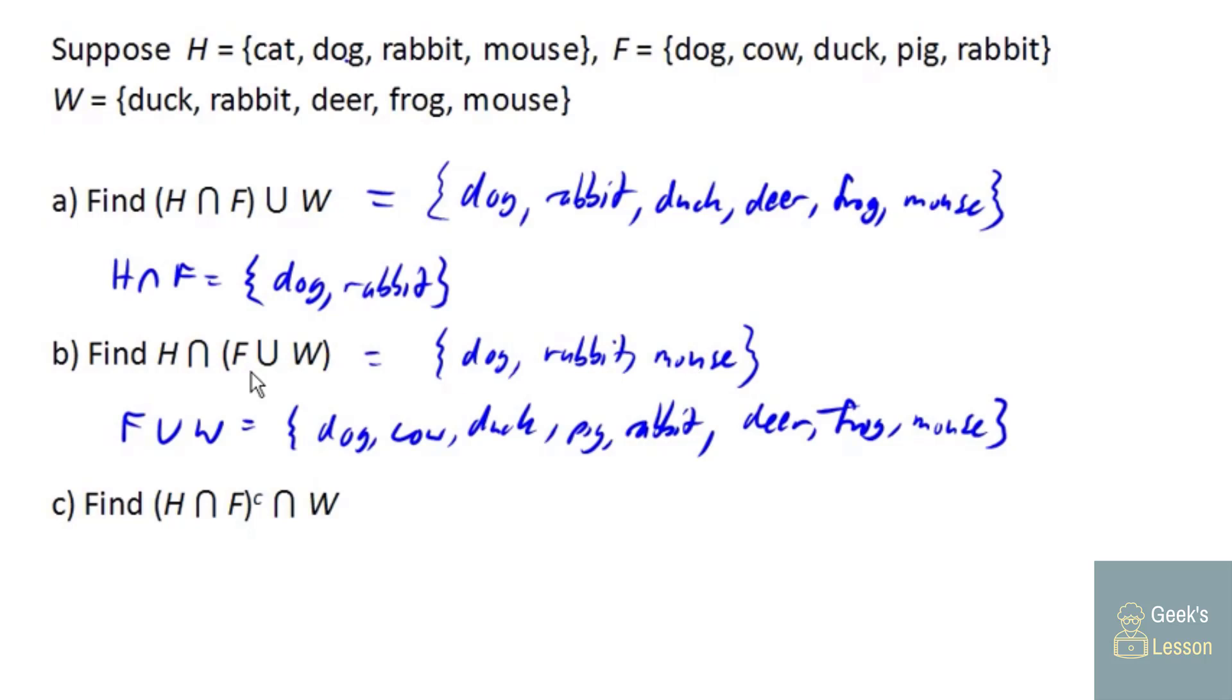Okay, so now for the last one, we're gonna start out by finding the intersection of H and W, which we did earlier. Now remember that this little C here is meaning complement. So the complement of H intersect F is not dog or rabbit. I know I could list out all the other possibilities, but I don't really want to here. So we're going to intersect not dog and rabbit with the set W. So we can take everything from W that's not a dog or a rabbit. So we'll go ahead and take the duck. We will skip the rabbit, because we're not supposed to take dogs or rabbits. Deer, frog, and mouse. And that is the intersection of W with the complement of H intersect F.